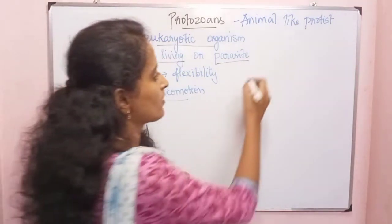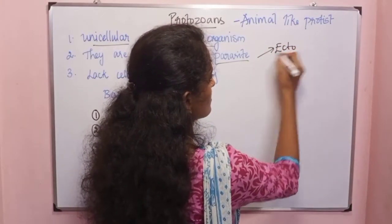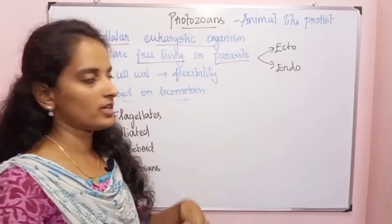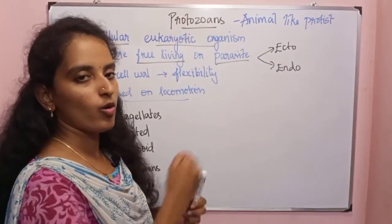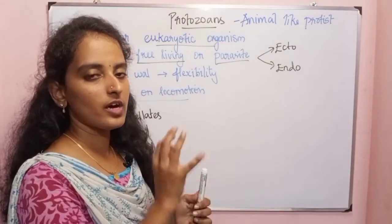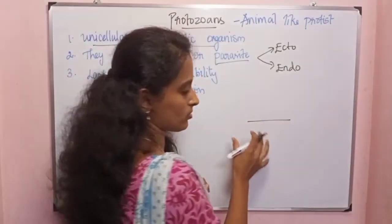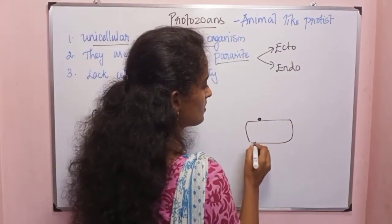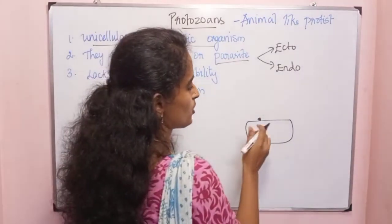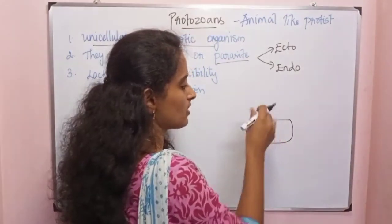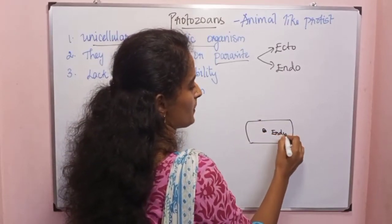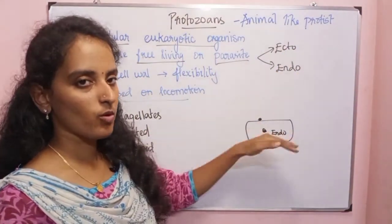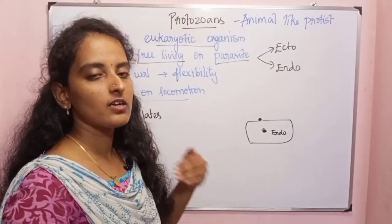Parasites are of two types: ectoparasite and endoparasite. A parasite is a living organism that depends on a host. An ectoparasite lives on the surface of the host, while an endoparasite lives inside the host. So protozoans can exhibit both ectoparasitic and endoparasitic lifestyles.